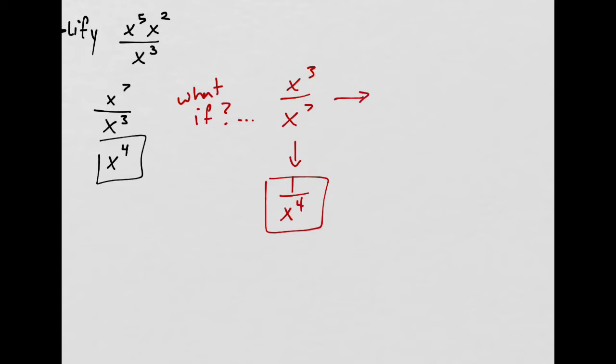Or you could do 3 minus 7, that's negative 4. And anytime we have a negative exponent, you bring it down to the bottom and put a 1 on the top. Because it's actually like 1 times this anyway, so the 1's still there no matter what.